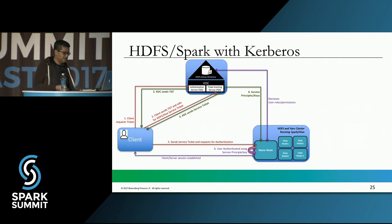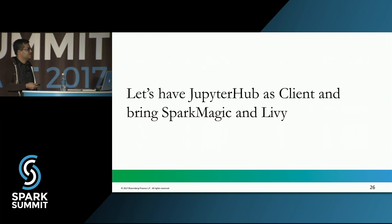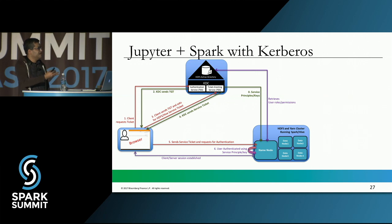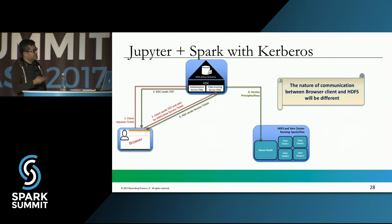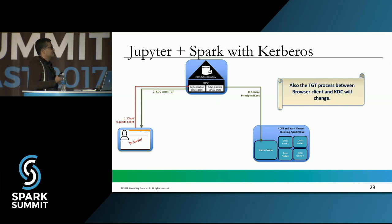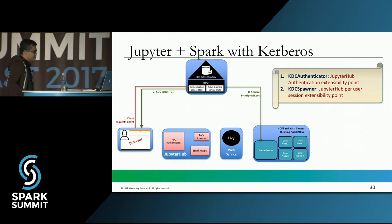Once authenticated, the connection is established between client and server. The name node of HDFS can also go to Active Directory to get roles and permission information. Now let's replace the traditional client with JupyterHub, bring in SparkMagic and Livy, and see what changes we need to make. I now have four communication points: browser to JupyterHub, JupyterHub to Livy, and Livy to the HDFS cluster, split across multiple nodes for scalability.